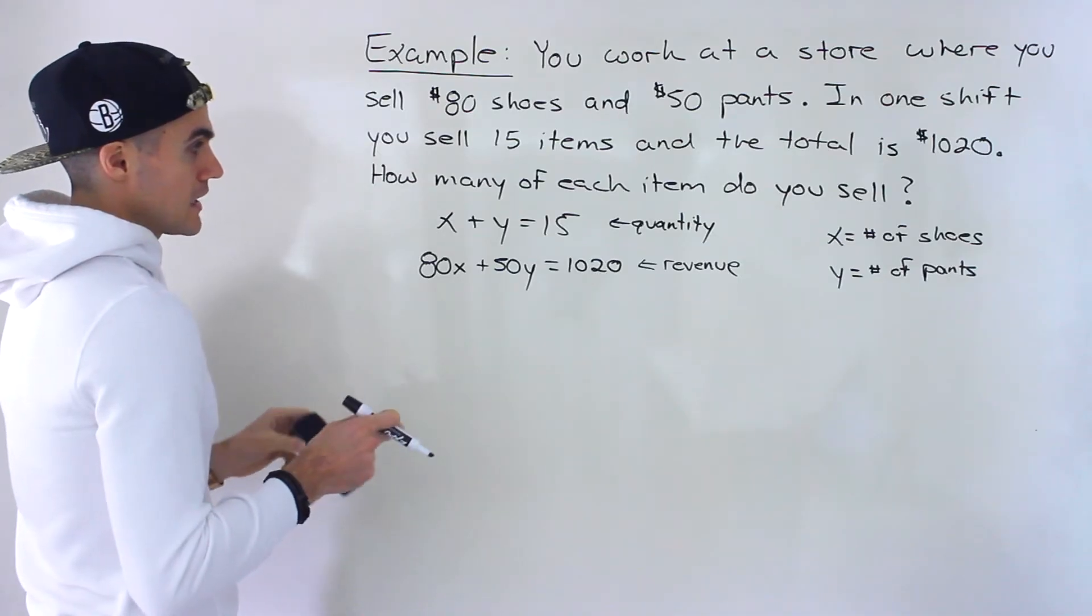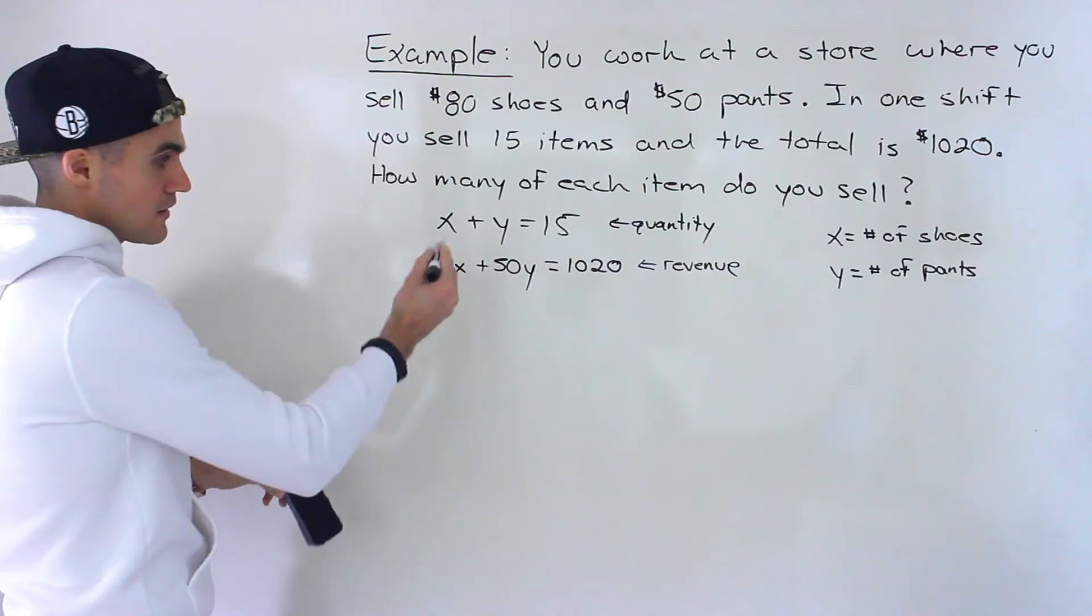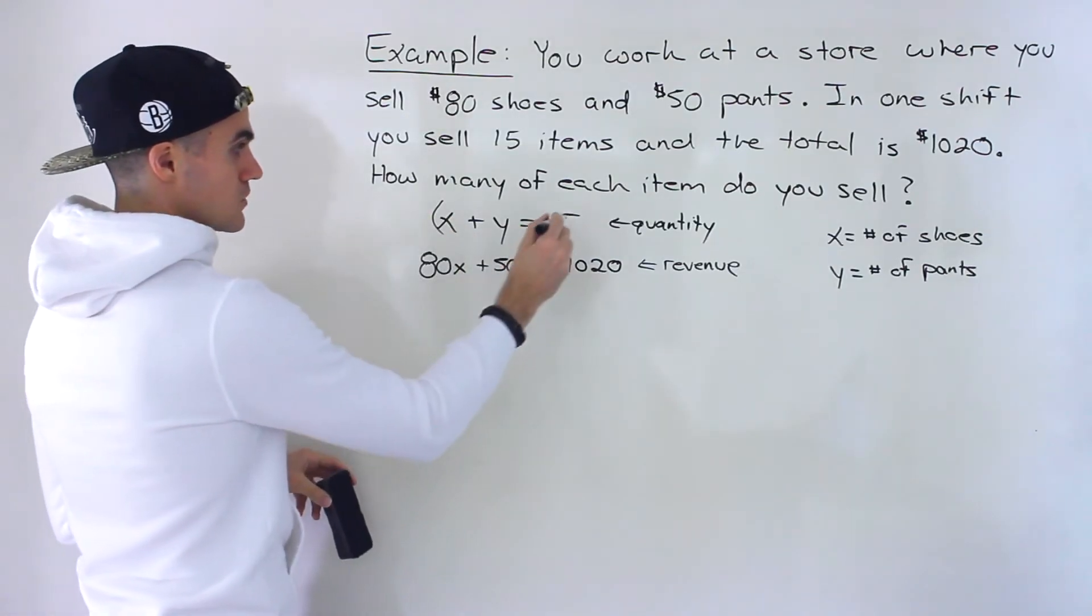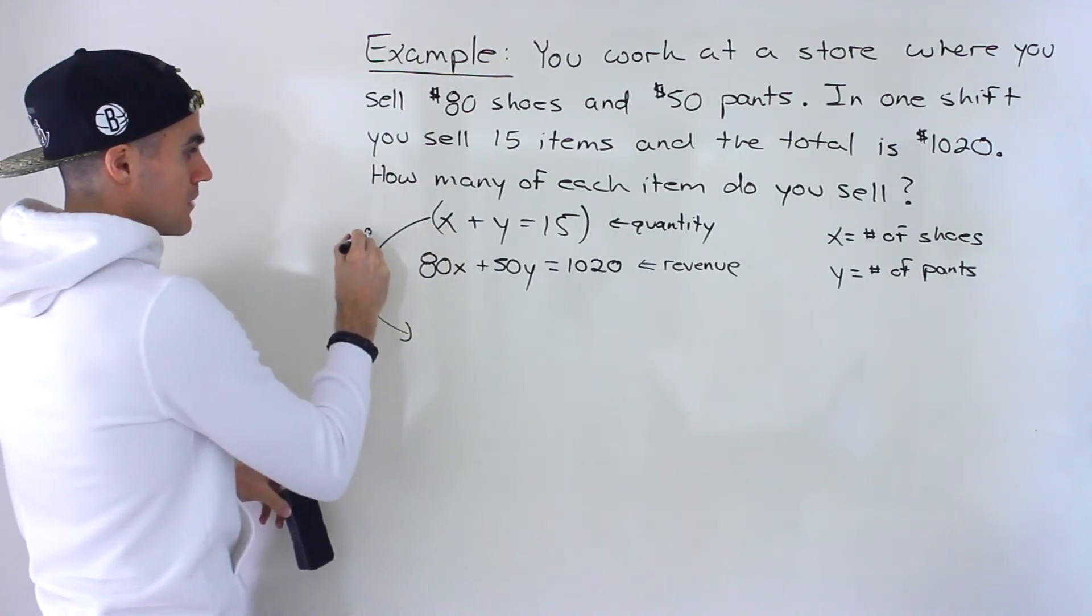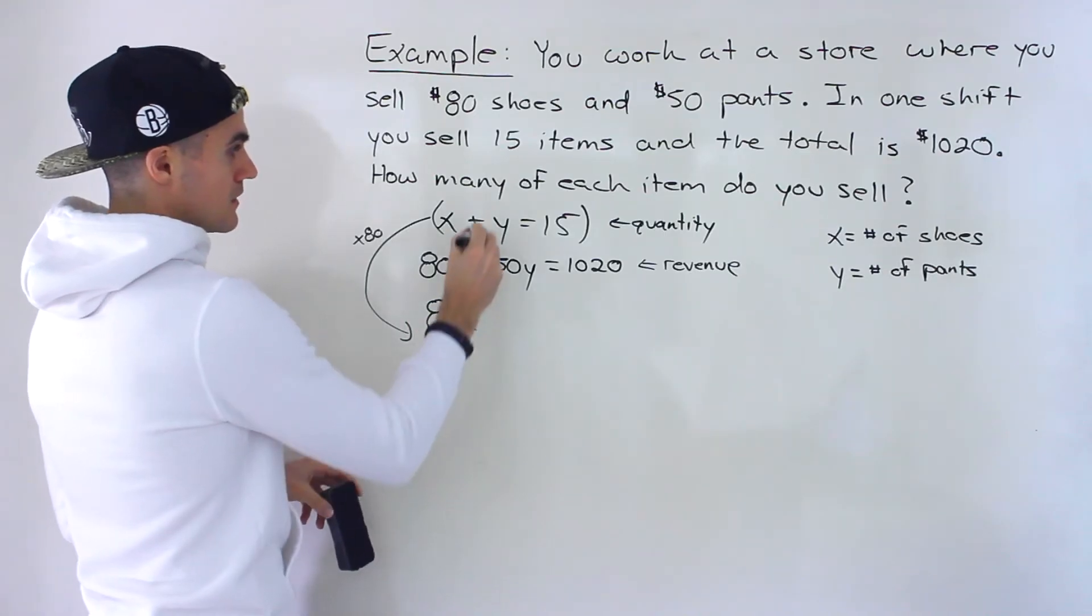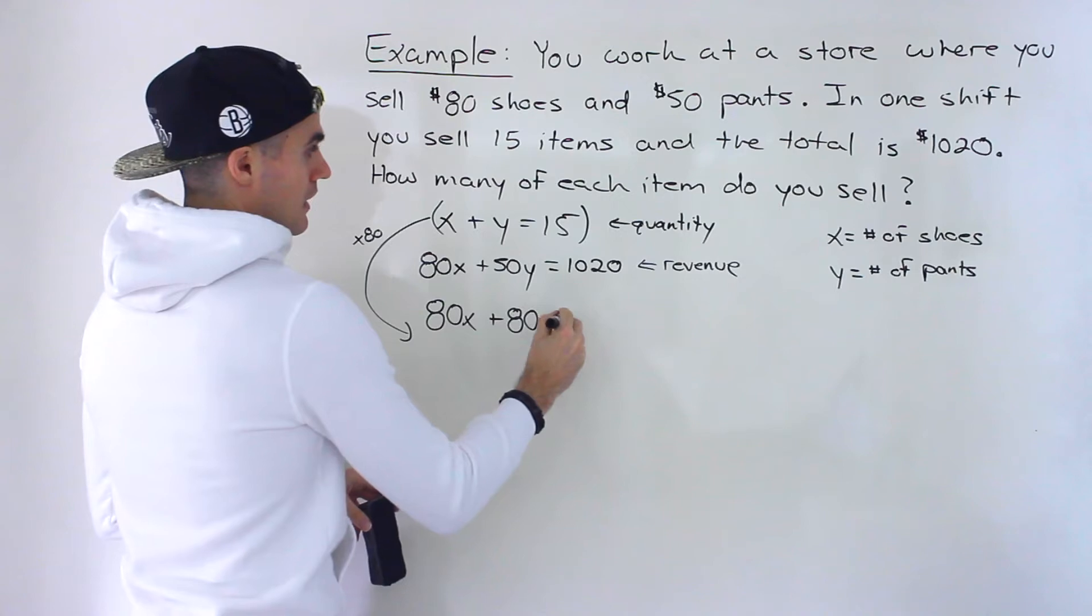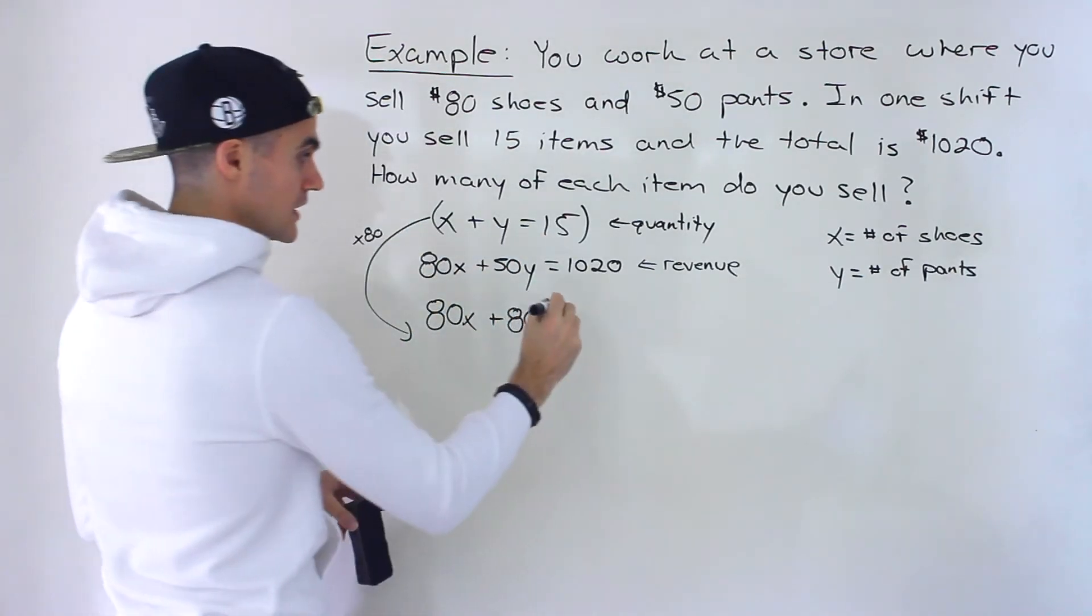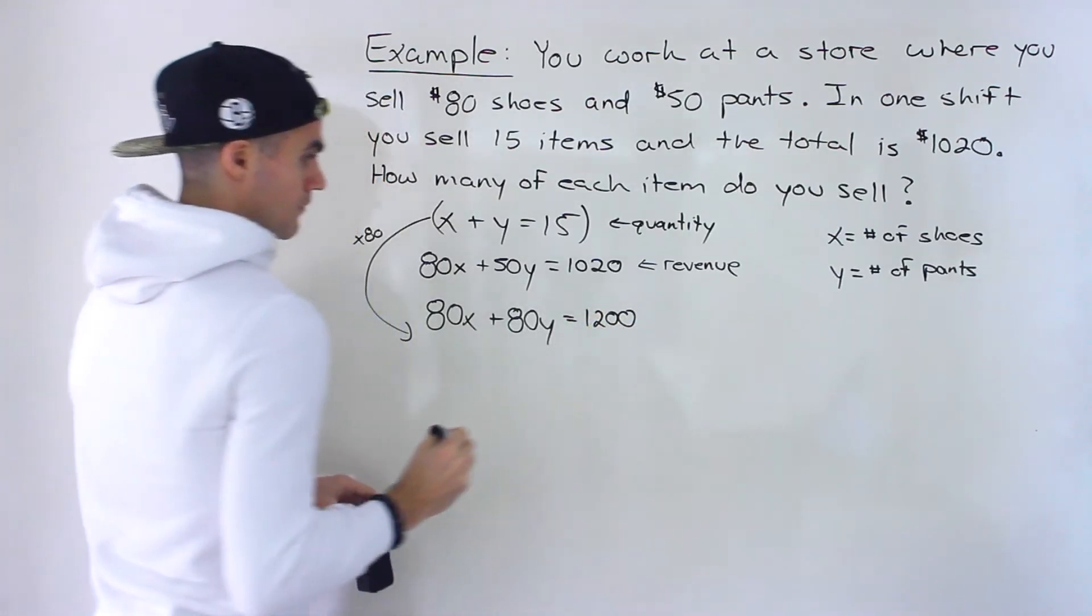So let's do this by elimination. What I'm going to do is we can get rid of the x's or the y's. Let's get rid of the x's. So I'm going to take this equation and multiply it by 80. So we'll have 80x, 80 times y is 80y, and then 80 times 15 would give us 1,200.